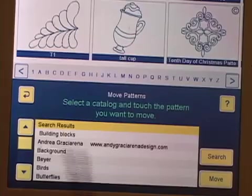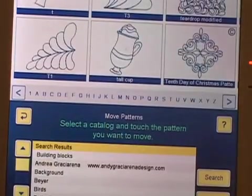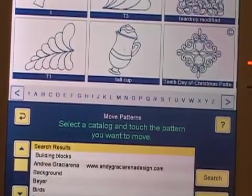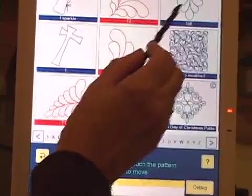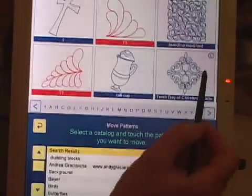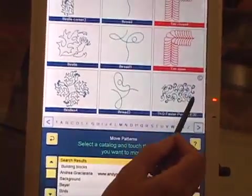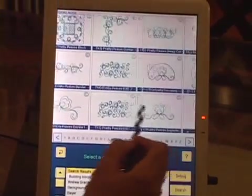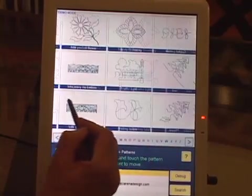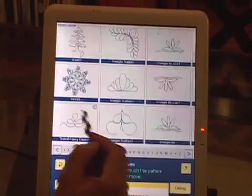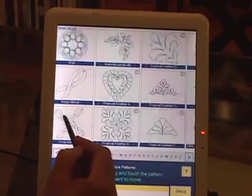Now I have found all my patterns that begin with a T. Maybe I want to move some of these, like these feather patterns. Maybe I want to move those into my feathers catalogue. I'm going to touch this, this, this, and this. They're all feathers. Now, I'm going to sweep the screen to see the rest of my patterns. Here are two more feathers. I'm selecting those. As long as I keep sweeping the screen, IQ will remember the ones that I have already selected. So I'm selecting all the ones that are feathers because I want to move them.